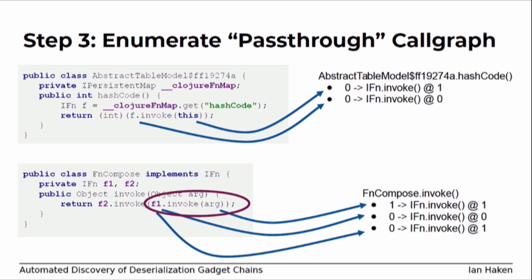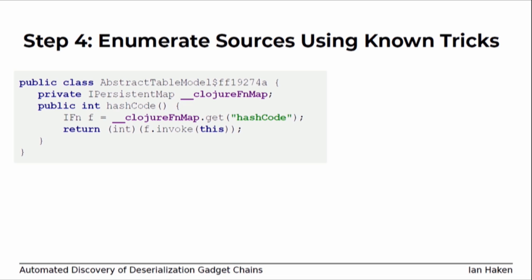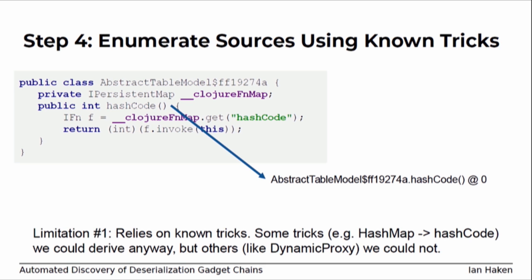Step 4 is just enumerating known entry points — using all the known tricks researchers have come up with to figure out how to get into interesting gadget chains. For example, if we see a hashCode method that overrides Object.hashCode, we enumerate that as an entry point. This does highlight one limitation: it relies on known tricks. Knowing we can get to hashCode we could derive from the symbolic execution of HashMap's readObject method, but there are other clever tricks — like wrapping things in a dynamic proxy so it calls InvocationHandler.handle — that we wouldn't be able to derive. So there's room for more gadget chains this might miss.